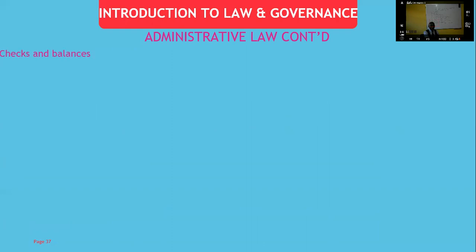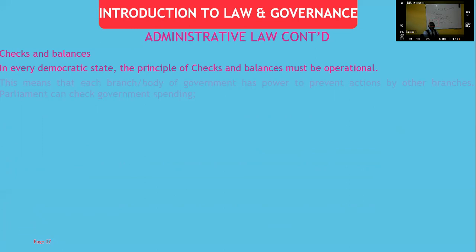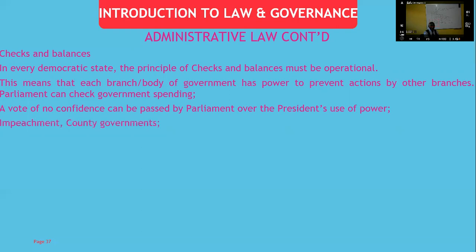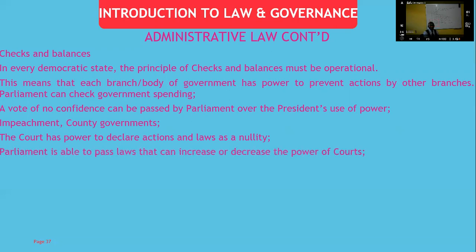Checks and balances operate in every democratic state — each branch has power to prevent wrongful action by the other branches. Parliament can check government spending; a vote of no confidence can be passed against the president for abuse of power; county assemblies can impeach a county governor; courts can declare actions and laws a nullity; parliament can pass laws increasing or decreasing the powers of courts; and parliament can amend provisions of the constitution, except those protected clauses.